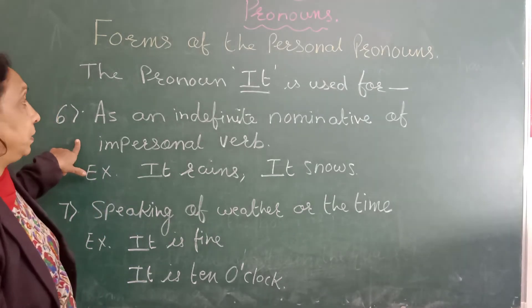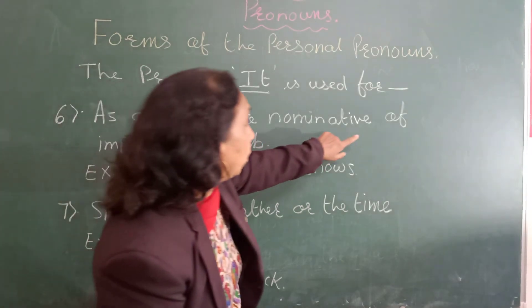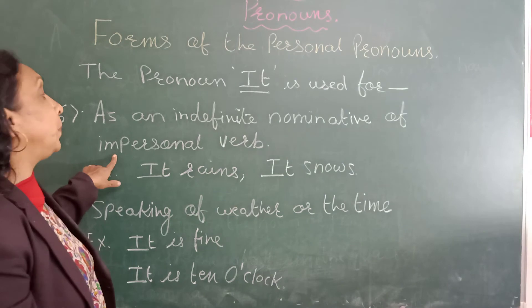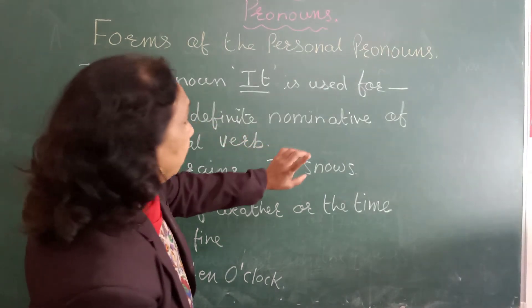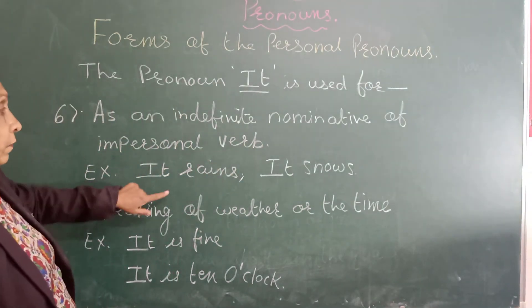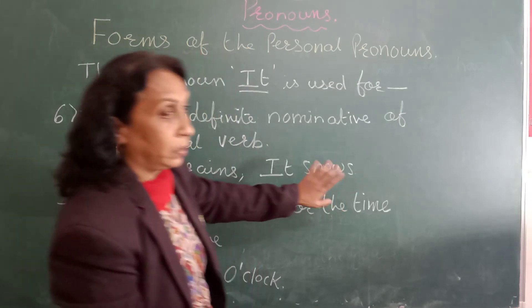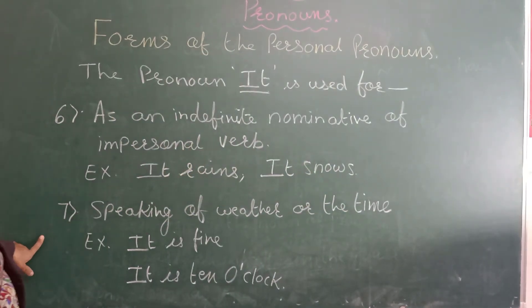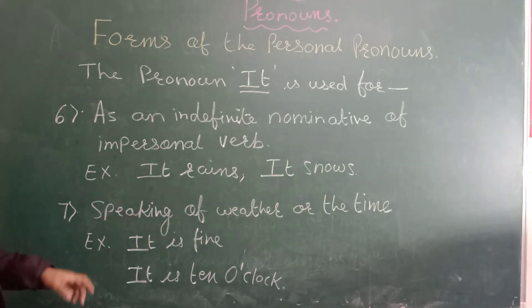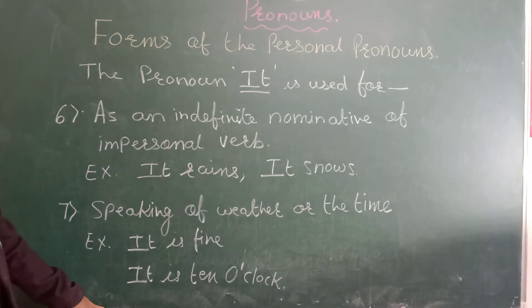The sixth use — 'it' is used as an indefinite nominative of an impersonal verb. For example: 'It rains', 'It snows'. Also, when we are speaking of weather or of any time, we use the pronoun 'it'. For example: 'It is fine' or 'It is ten o'clock'. So now you have seen where we use the pronoun 'it'.